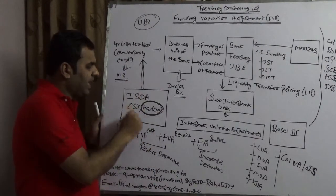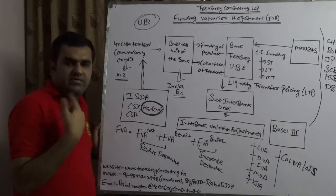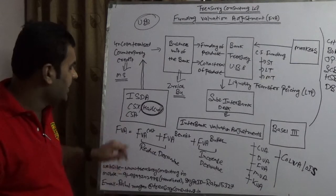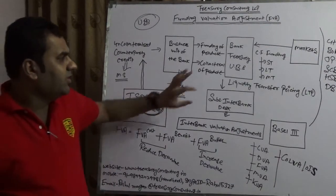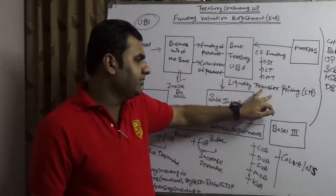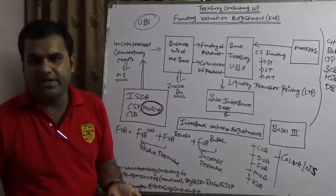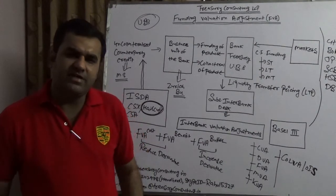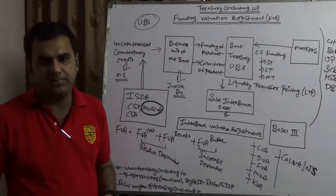Similarly, such challenges will happen because currently there is no collateralized market in India. There are limited companies that have ISDA in their books, and even those that do — I know the majority do not have CSX in their books. Also, the interaction between the bank treasury and the interbank treasury that happens through LTP, Liquidity Transfer Pricing, is completely unknown in India. So once IFRS comes in 2018, these valuation adjustments will start playing a very important role.